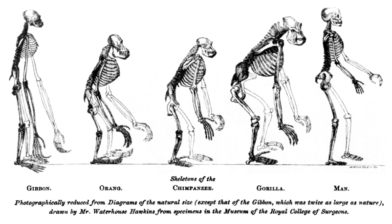The first is the non-constancy of species, or the modern conception of evolution itself. The second is the notion of branching evolution, implying the common descent of all species of living things on Earth from a single unique origin. Additionally, Darwin further noted that evolution must be gradual, with no major breaks or discontinuities. Finally, he reasoned that the mechanism of evolution was natural selection.